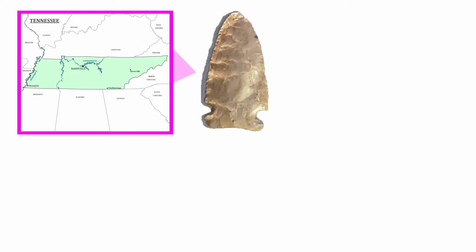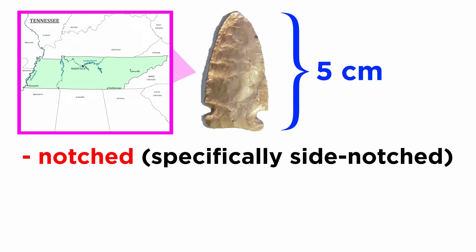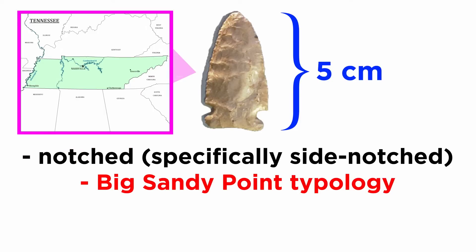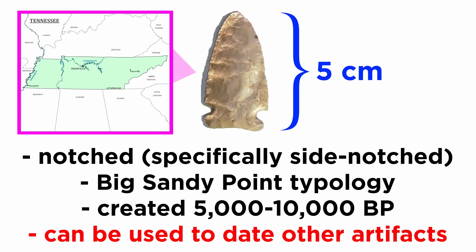Let's analyze a real point. Suppose the point was found in Tennessee, USA, and measures five centimeters in length. Notice the cut areas near the bottom — this makes the point notched rather than stemmed. The notches aren't in the base or corner of the point, so it's a side-notched point. Using an archaeological database of typologies, we would place it into the Big Sandy point typology. This tells us the point was created around 5,000 to 10,000 BP, and is part of a napping tradition that spans several states in the eastern United States. If this point was found in situ, we could also date other artifacts and features in the same layer. This was how the typology's date range was created — by finding dozens of examples of the point in layers that could be dated, since we can't just date lithic material.